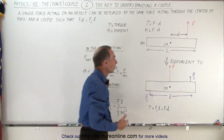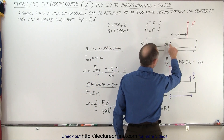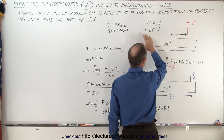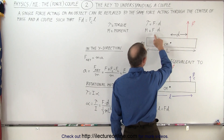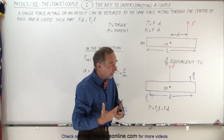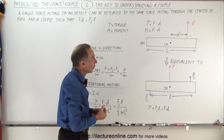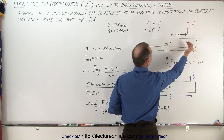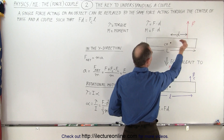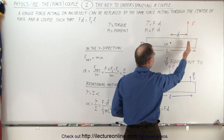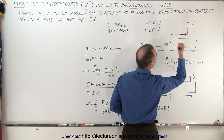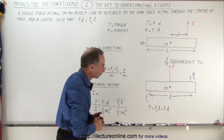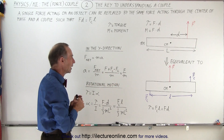We have a torque relative to the center mass point, and the torque will be equal to the force times the distance — or we can call it the moment caused by that force, equal to the force times the distance. The direction will be out of the board, as we point our fingers in the direction of the force and curl from the line of action to the point of rotation, giving a torque out of the board in the Z direction, assuming the board is the XY plane.